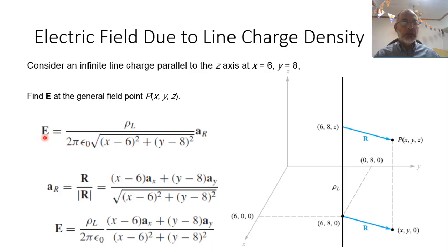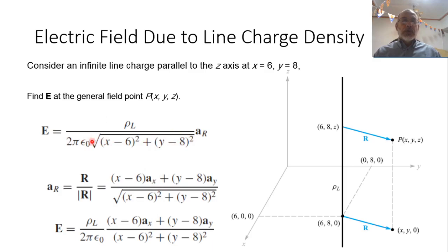As an example, if we have an infinite line charge located at x = 6 and y = 8, the electric field would be ρL / (2πε₀) multiplied by the unit vector [(x − 6)x̂ + (y − 8)ŷ] divided by ρ², where ρ² = (x − 6)² + (y − 8)².